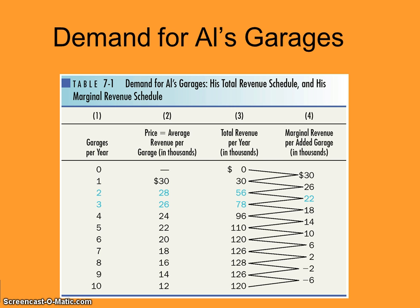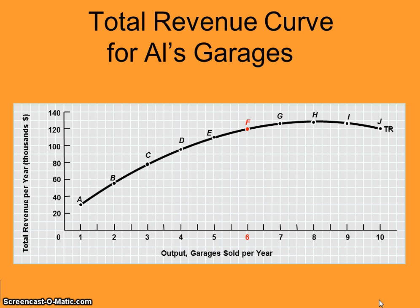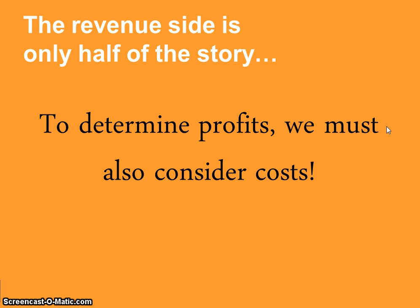Marginal revenue is just the change in total revenue over the change in output. Since output changes by one each time in this data, marginal revenue is basically the difference in total revenue as you move down the line. Total revenue forms a hill-shaped curve — it increases and then eventually decreases. But the revenue side only tells part of the story; to determine profits, we also have to consider the cost of production.